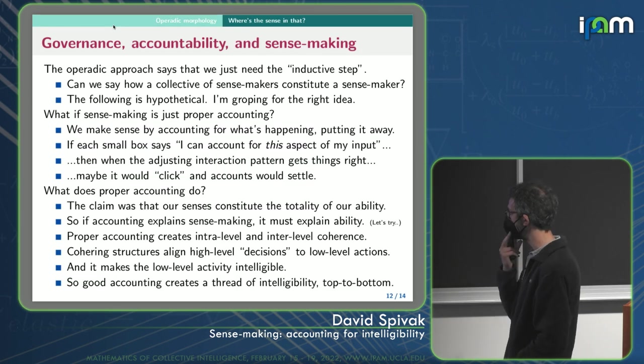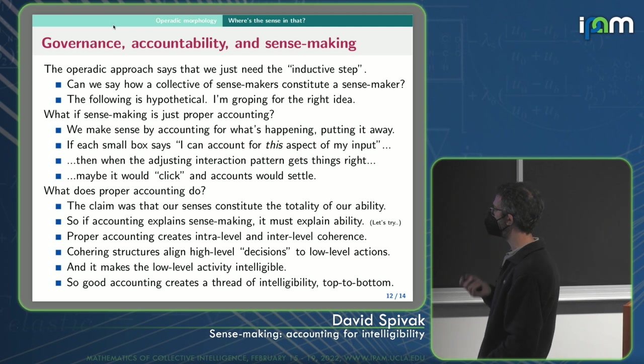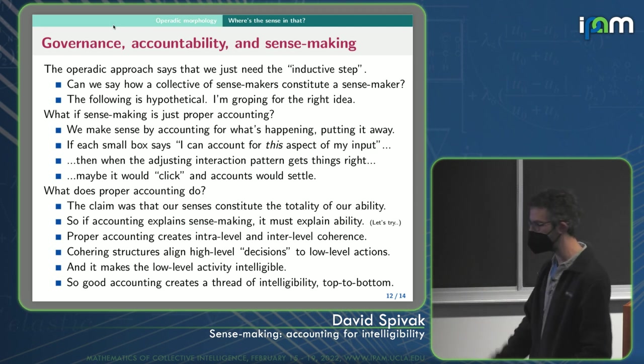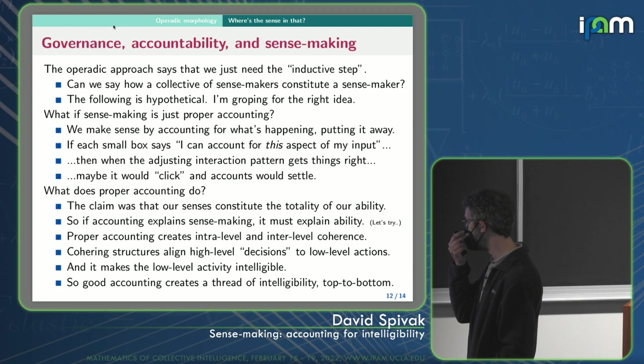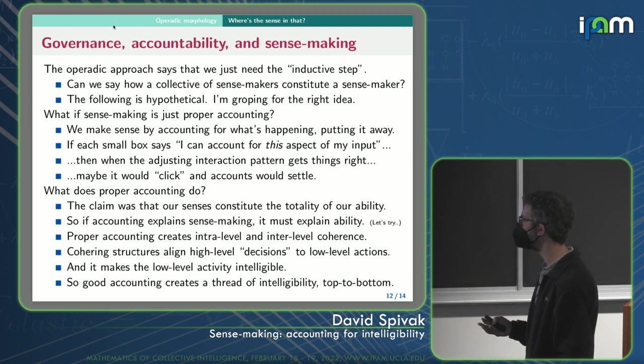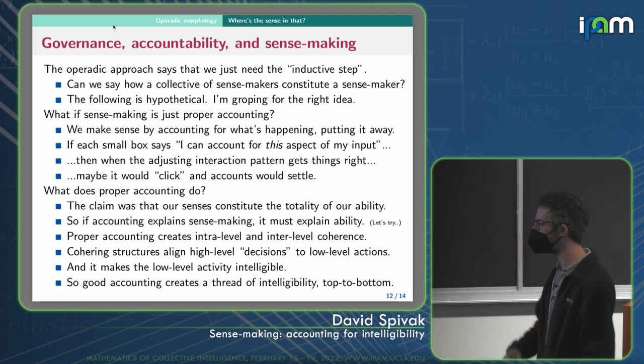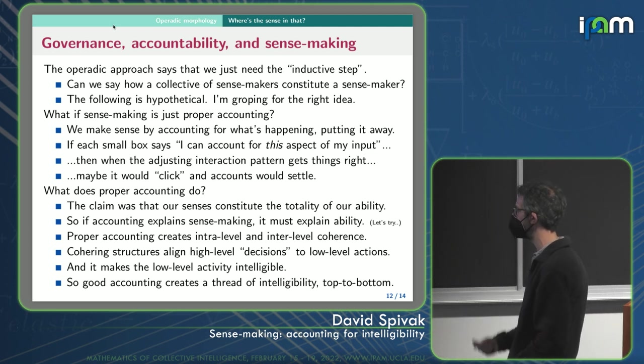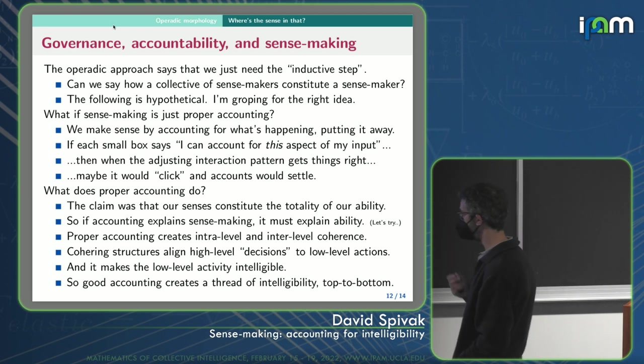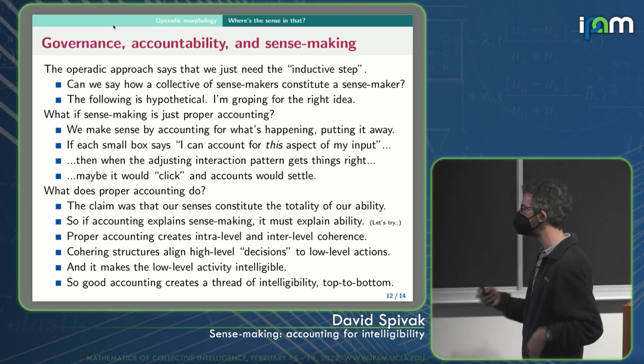And so the claim is, what would that do? If senses, if our senses constitute the totality of our ability, if I'm saying that everything I know how to do is from sense making and senses, then that would say that if accounting explains sense making, then accounting would have to explain all of our ability. So I am, again, I'm trying this out here. It doesn't feel like it's really quite done, but I'm going to try.